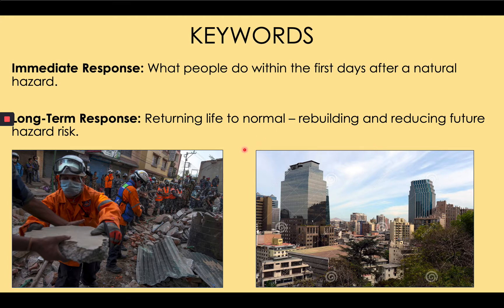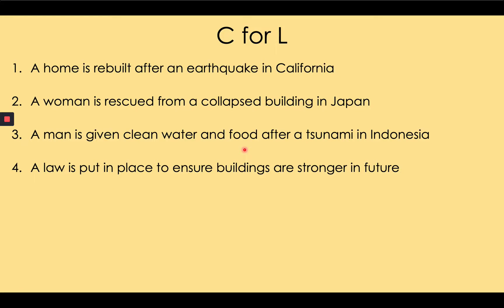Please write both of these phrases and the definitions. Read these sentences and decide whether each is immediate or long term — just write immediate or long term next to each number. Number one: long term. Two: immediate. Three: immediate. And four: long term. Immediate responses save lives. Long-term responses prevent future disasters.